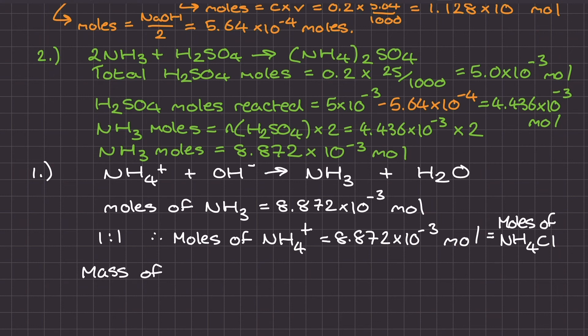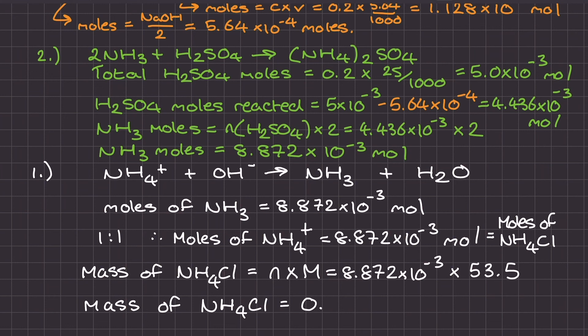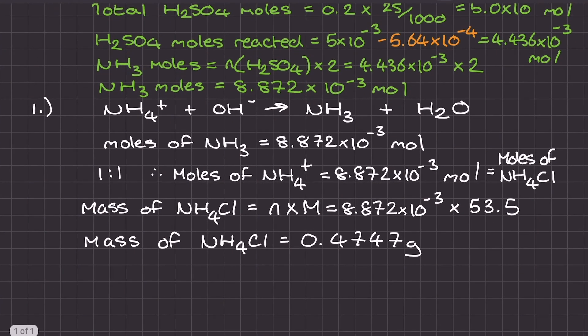We are very nearly there, so what we need to do now is convert this mole value for the ammonium chloride into a mass value, and we do that by doing moles times molar mass. The molar mass of the ammonium chloride is 53.5 grams per mole, as identified earlier in the question, and what I need to do is moles times that value to get the mass in grams of the ammonium chloride in the impure sample. As you can see, that mass value of ammonium chloride is 0.4747 grams.